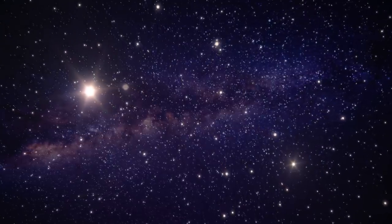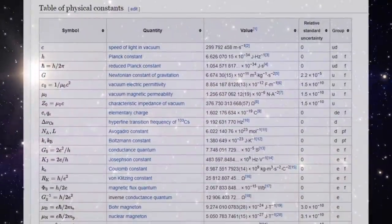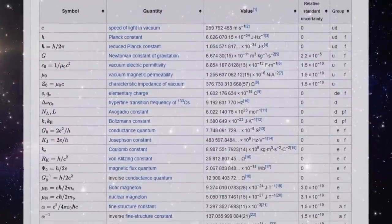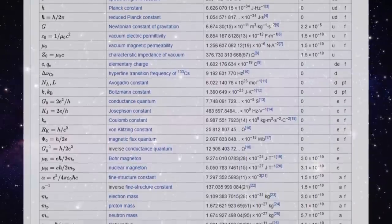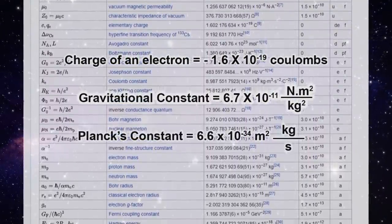Physics is full of constants. These are values or properties for which there's no theoretical basis. They're only determined by measuring them. Some of these constants are things like the charge of the electron, the gravitational constant, Planck's constant, and many others.